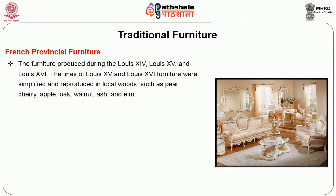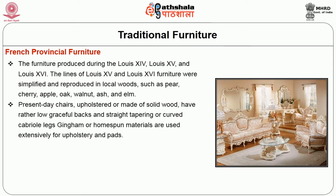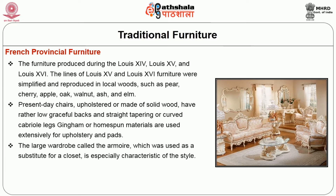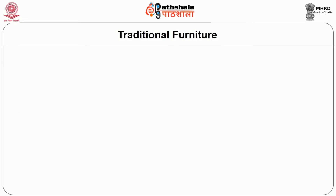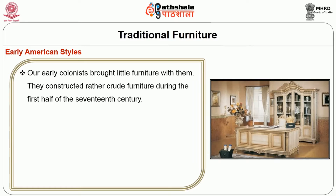French Provincial Furniture: The furniture produced during the Louis XIV, XV, and XVI periods had its lines simplified and was reproduced in local woods such as pear, cherry, apple, oak, walnut, ash, and elm. Present day chairs, upholstered or made of solid wood, have rather low graceful backs and straight tapering or curved cabriole legs. Gingham or homespun material are used extensively for upholstery and pads. The large wardrobe called the armoire, used as a substitute for a closet, is especially characteristic of the style. Hanging shelves for pottery, glass, and brass were also associated with the style. Early pieces include trestle tables and four-postered beds with valances and draperies.